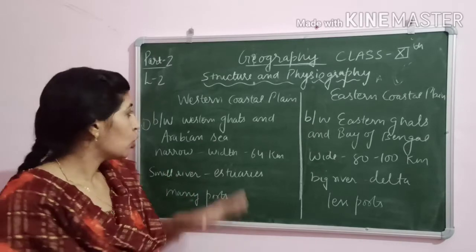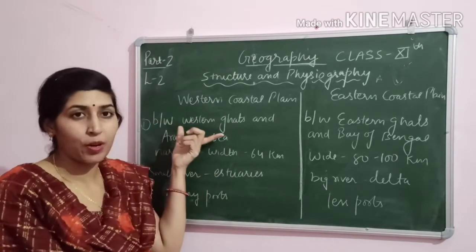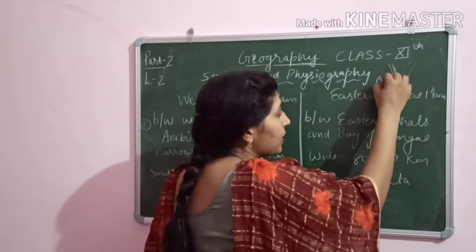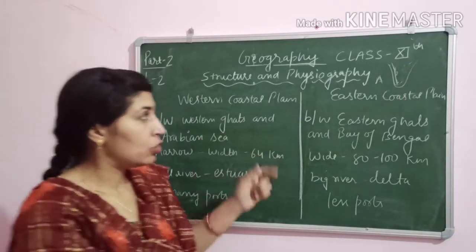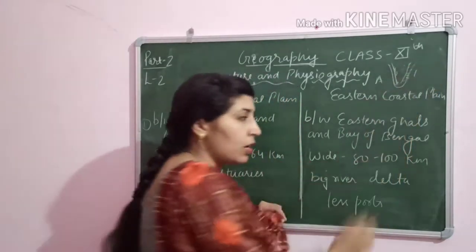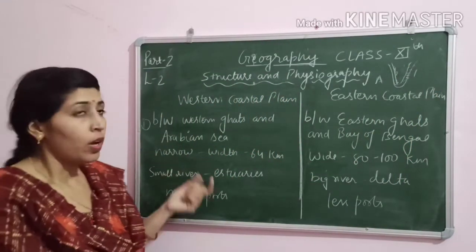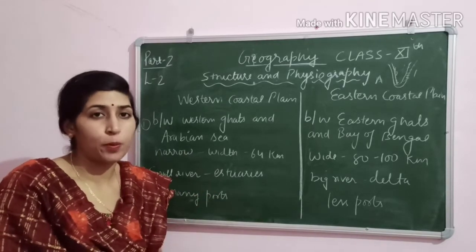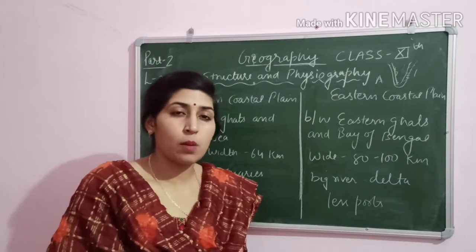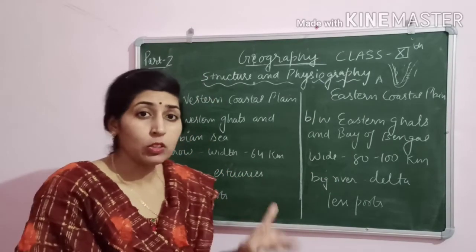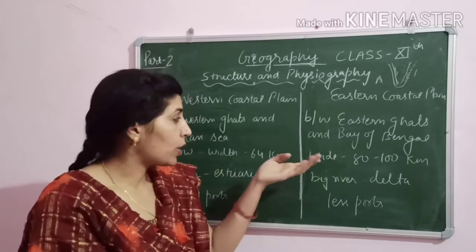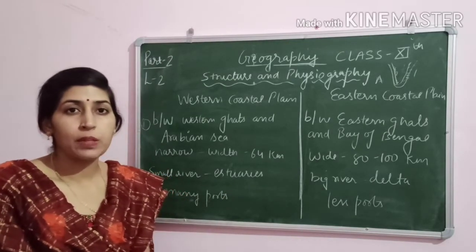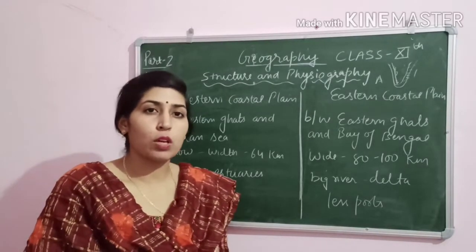Now let's look at the differences between the eastern and western coastal plains. The western coastal plain lies between the Western Ghats and the Arabian Sea, while the eastern coastal plain lies between the Eastern Ghats and the Bay of Bengal. The western coastal plain is narrow — only up to 64 km wide — whereas the eastern coastal plain is 80 to 100 km wide, and up to 120 km in Tamil Nadu, making it much wider.